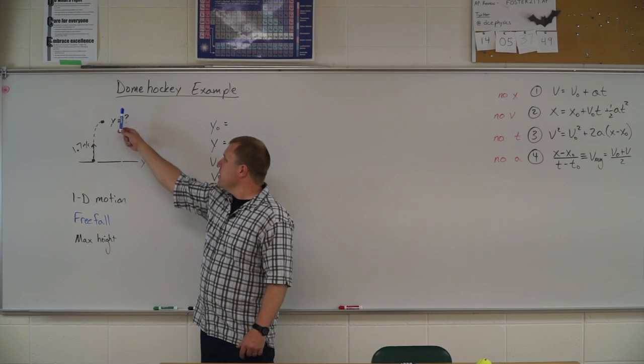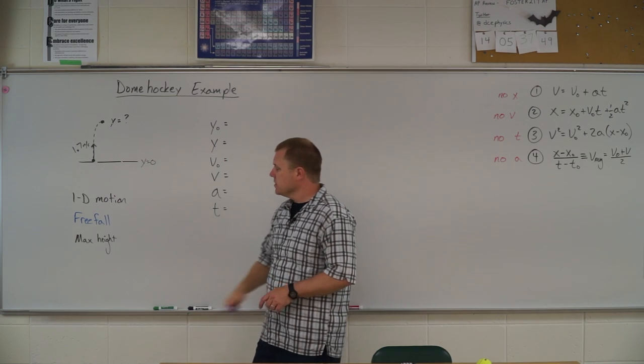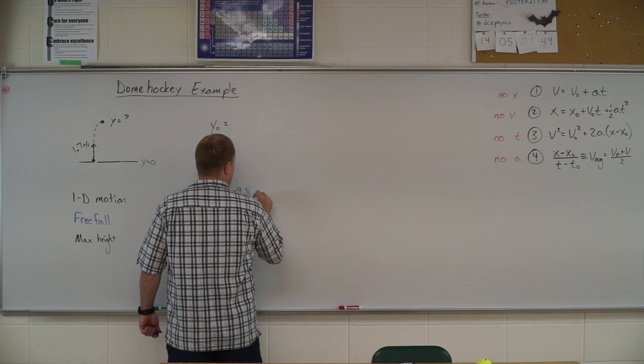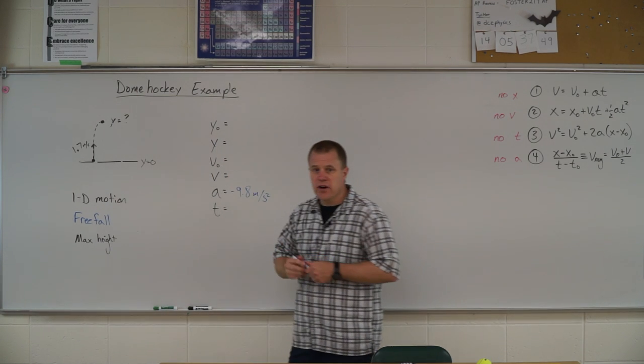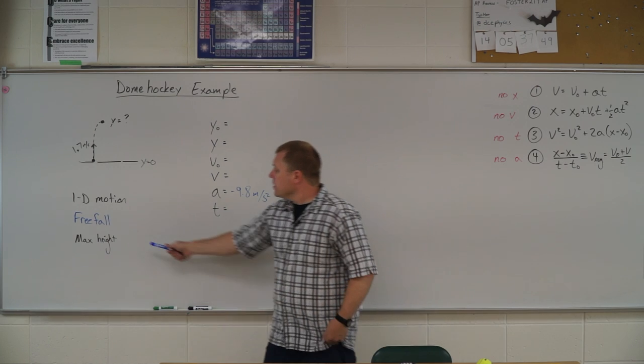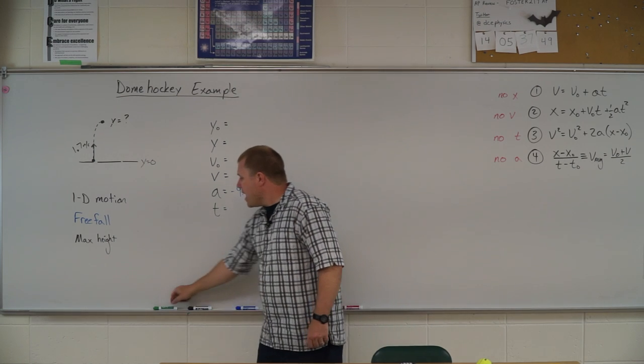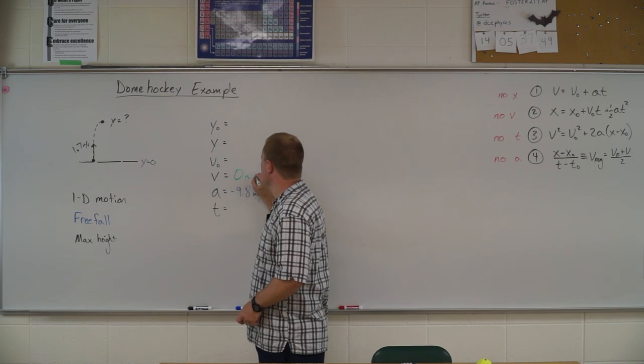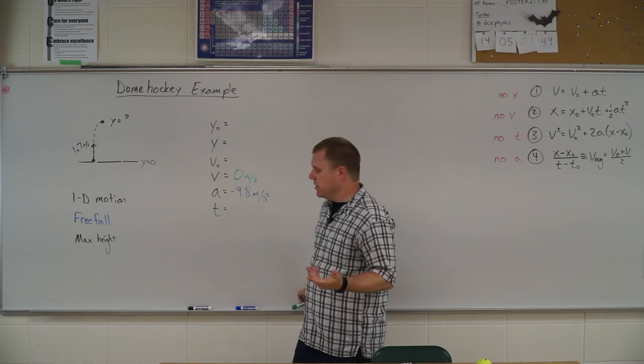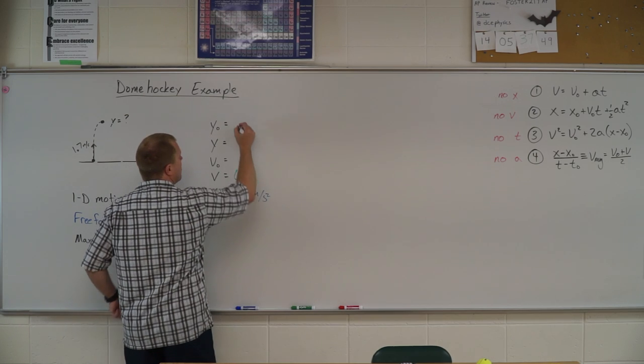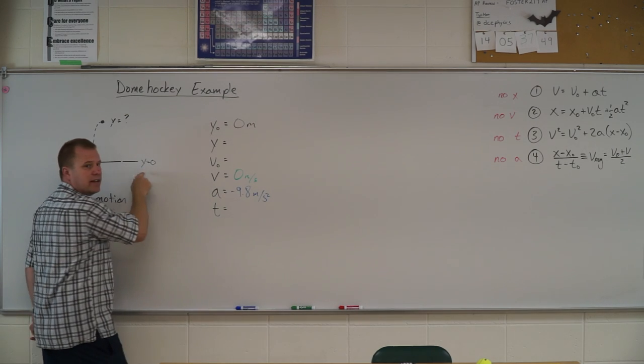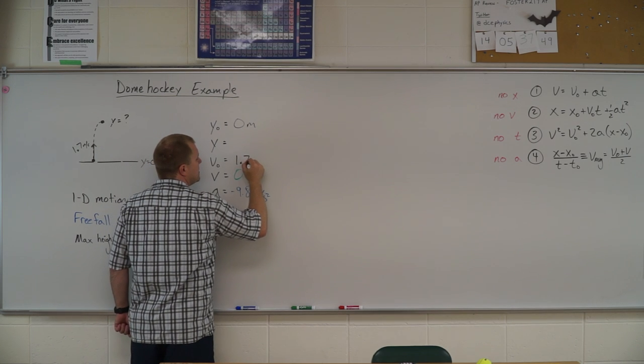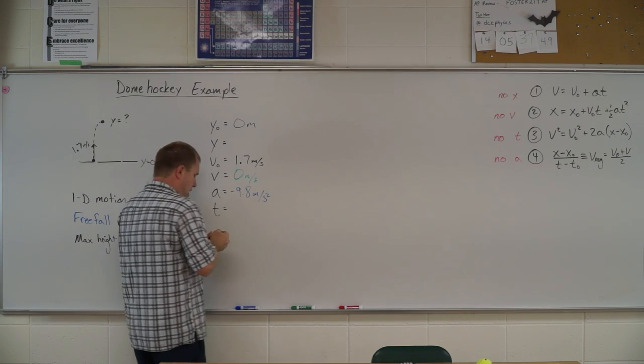For now, let's solve this max height problem. It is 1D motion, going straight up in the air. So I'll list those variables. It's free fall again. So I have a negative 9.8 meters per second squared for the acceleration. It's also a max height problem. Max height means that my final velocity is 0 meters per second. It starts at a height of 0 meters because we chose that. And it gave us the initial velocity of 1.7 meters per second.